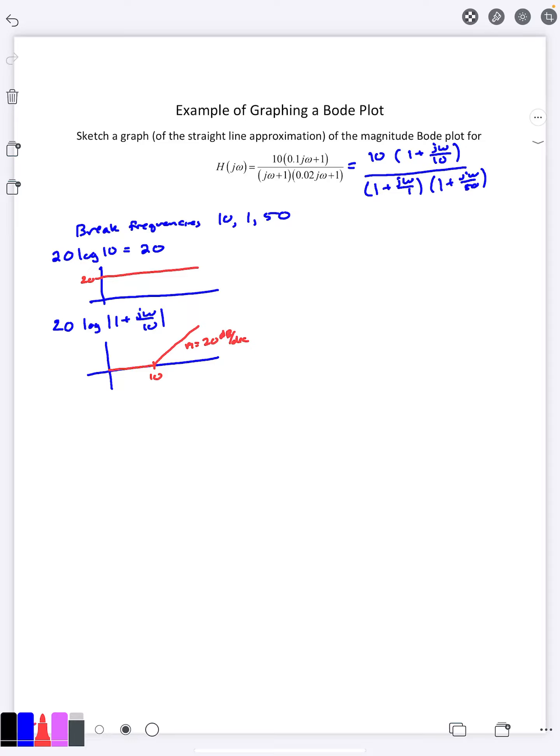However, when I look at the denominator ones, so this would be minus sign because they're on the denominator, right? Logs in the denominator become subtraction. So 20 log of absolute value 1 plus j omega over 1.